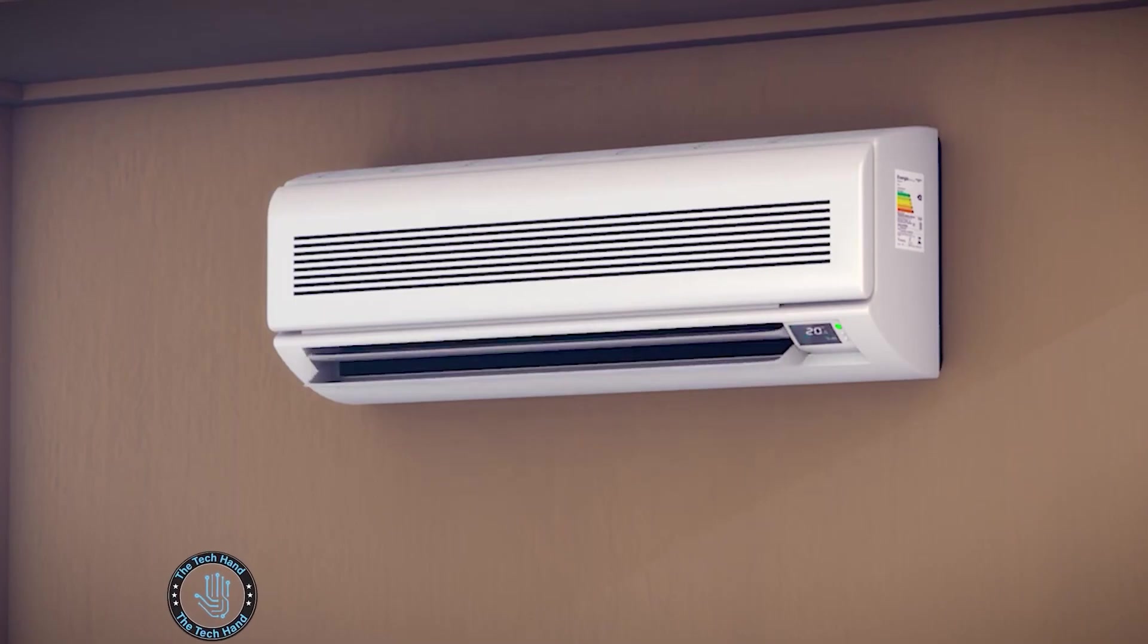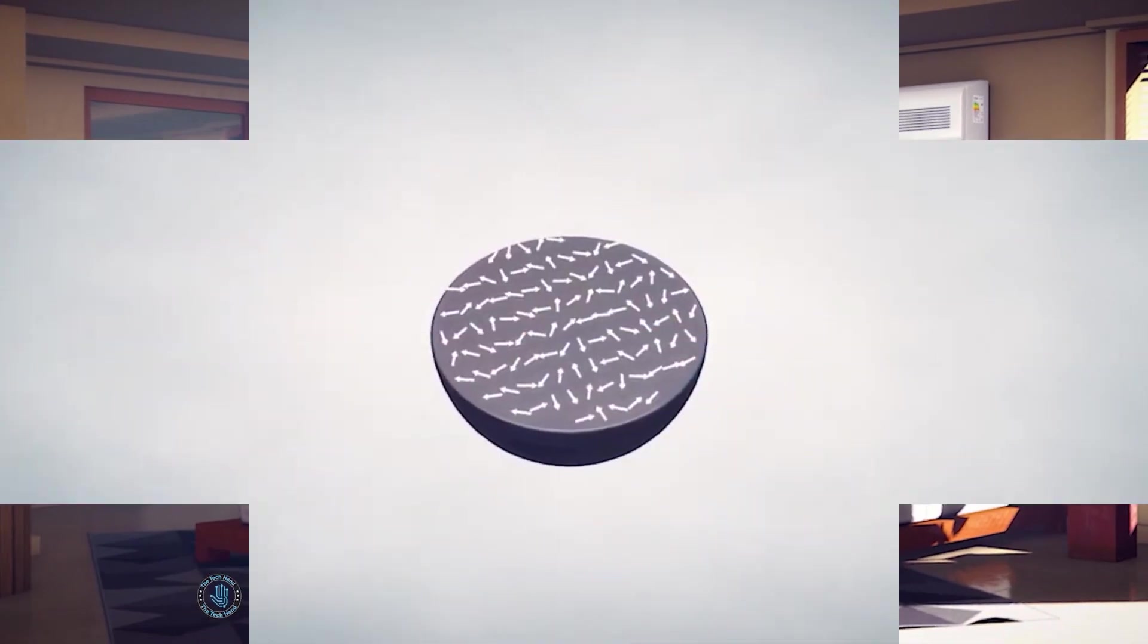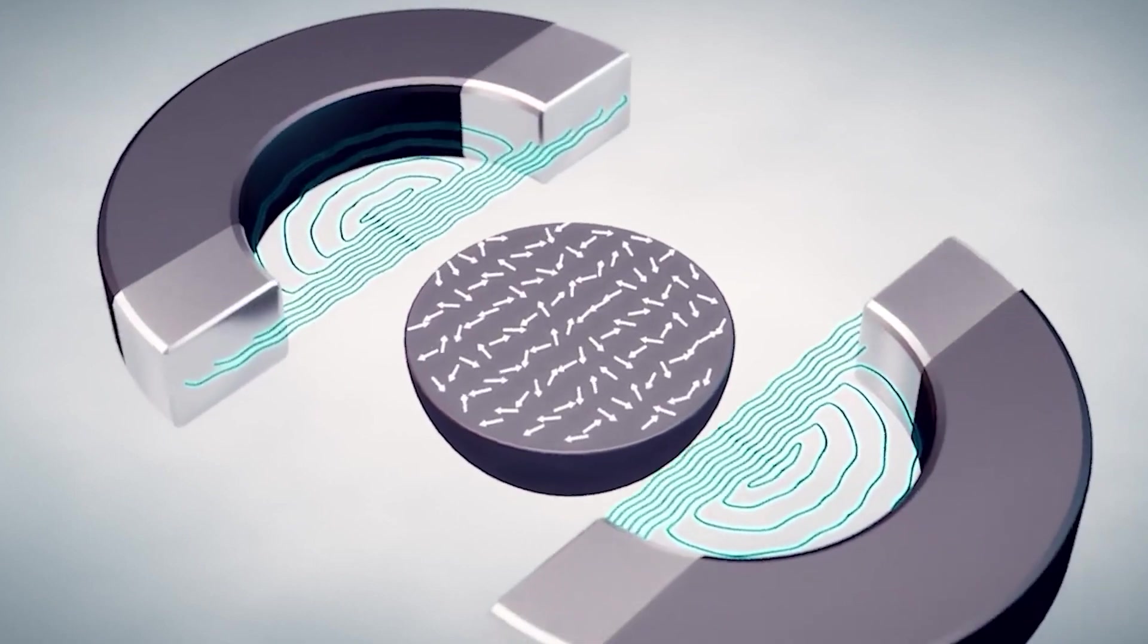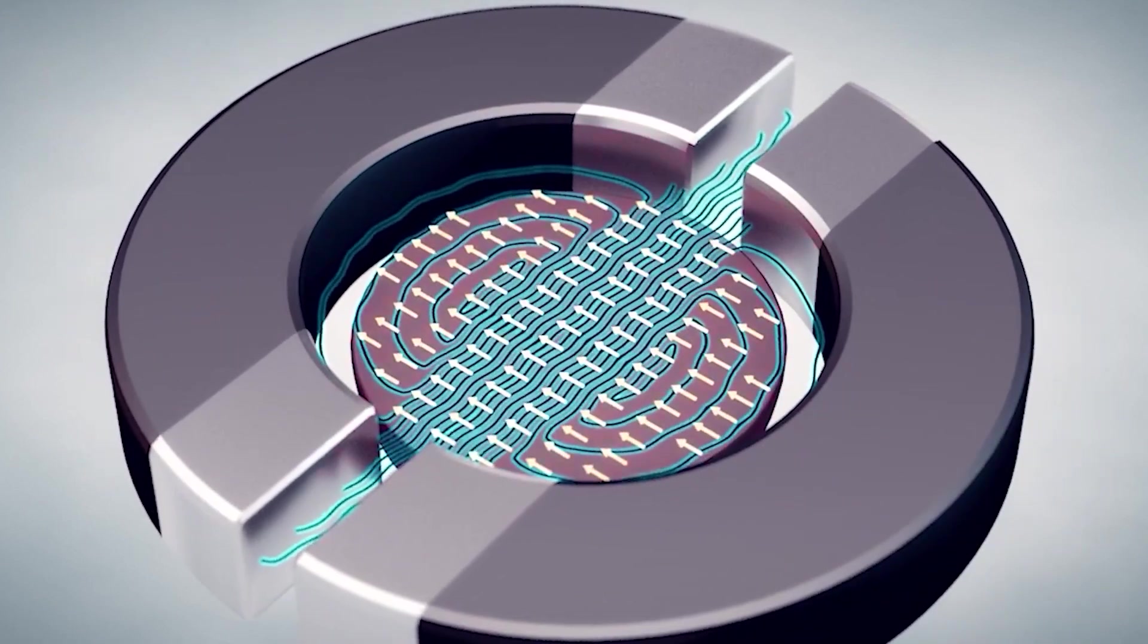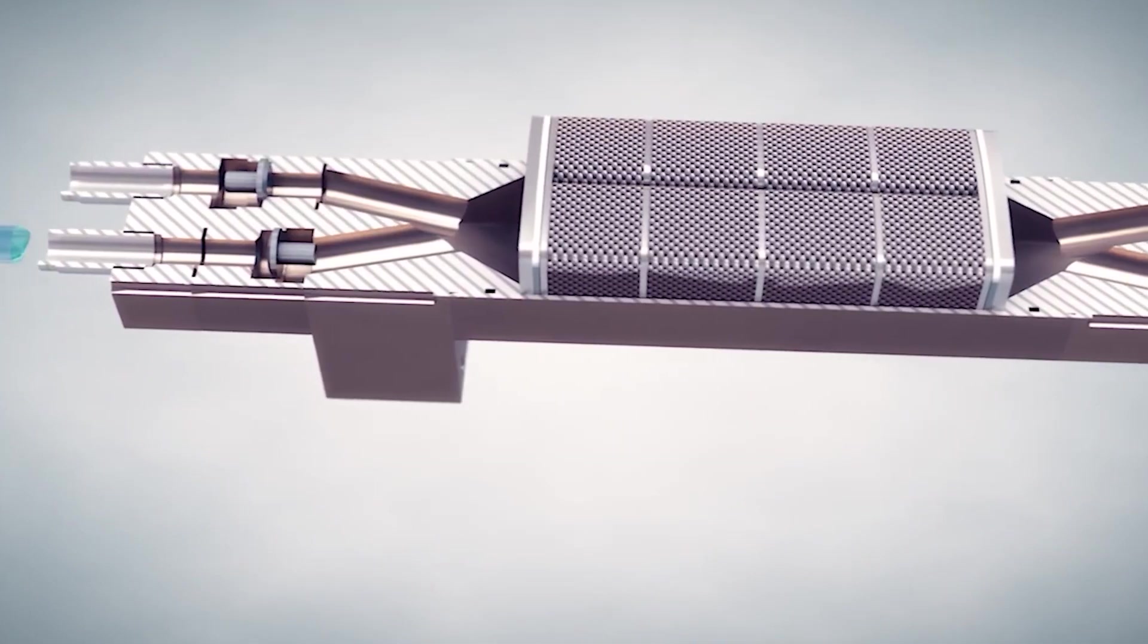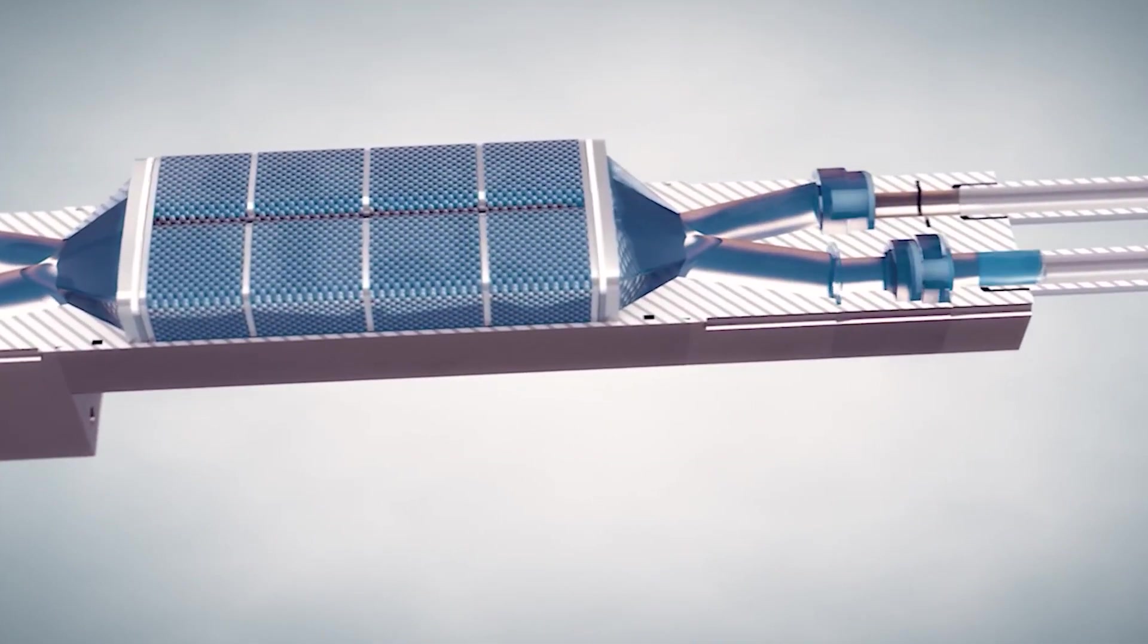Number 8: Magnetic Refrigeration Motors. Magnetic refrigeration is a cooling technology that uses a magnetic field to change the magnetic properties of a material, usually a magnetic caloric material, to generate a temperature difference. This temperature difference can then be used to transfer heat from one place to another, allowing for the creation of a refrigeration cycle.